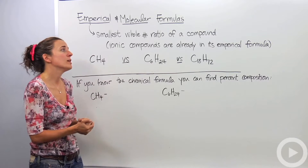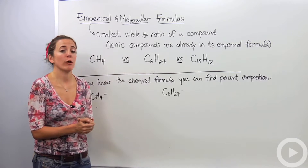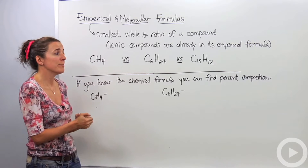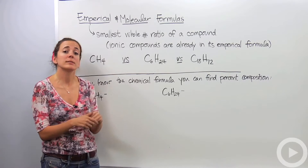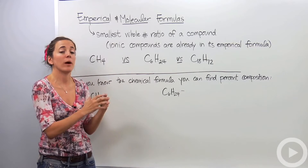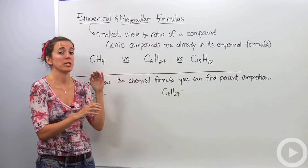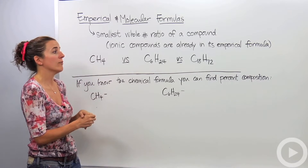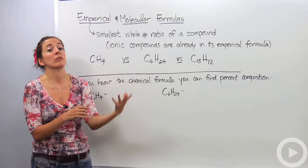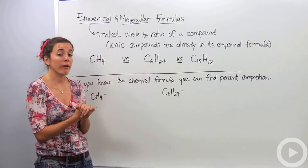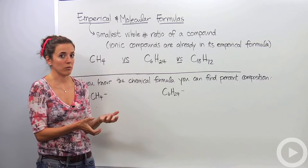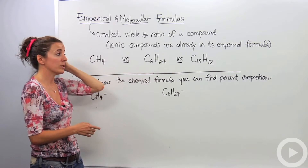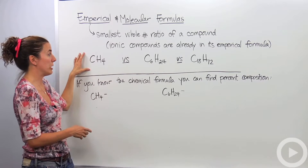Empirical formulas are the smallest whole number ratio of a compound. Ionic compounds are already in their empirical formula because they're already in their lowest ratio — when you bring two ions together, it's actually in its lowest ratio already. So ionic compounds don't have a separate empirical and molecular formula. However, covalent compounds, or molecules, do have empirical and molecular formulas, which we'll illustrate up here.